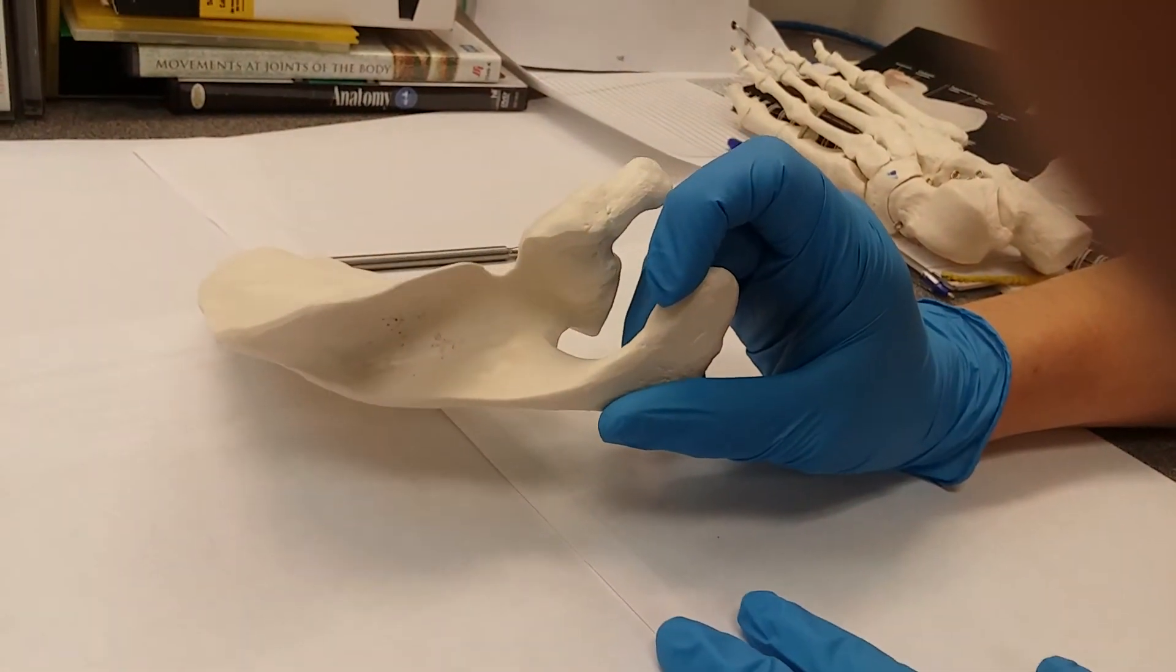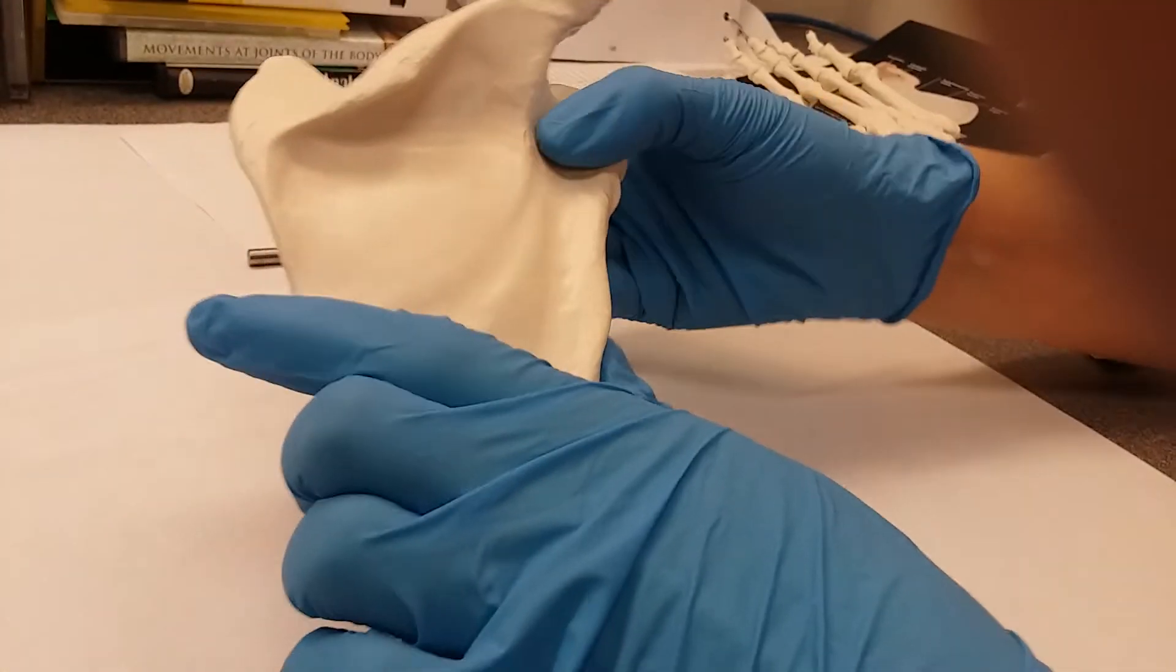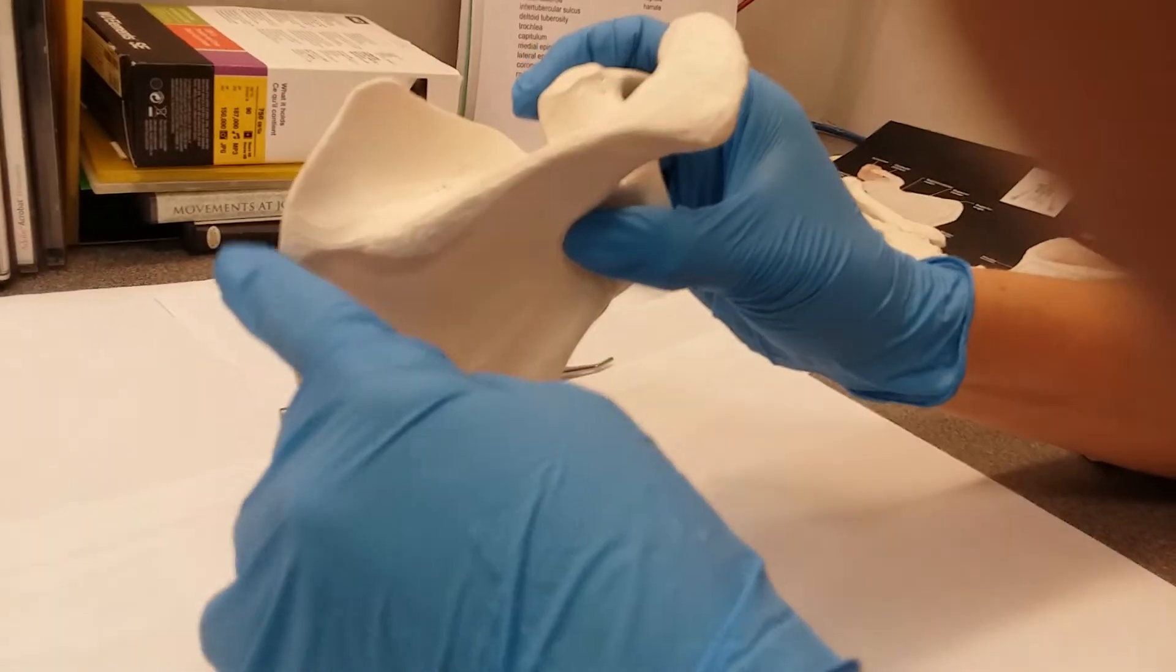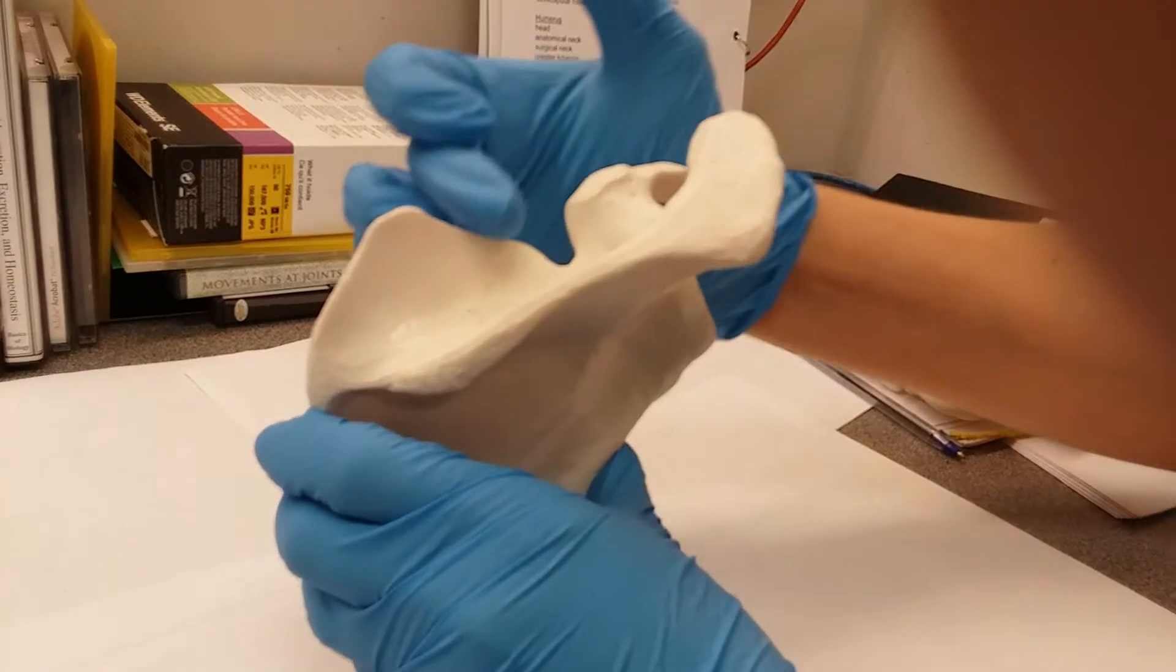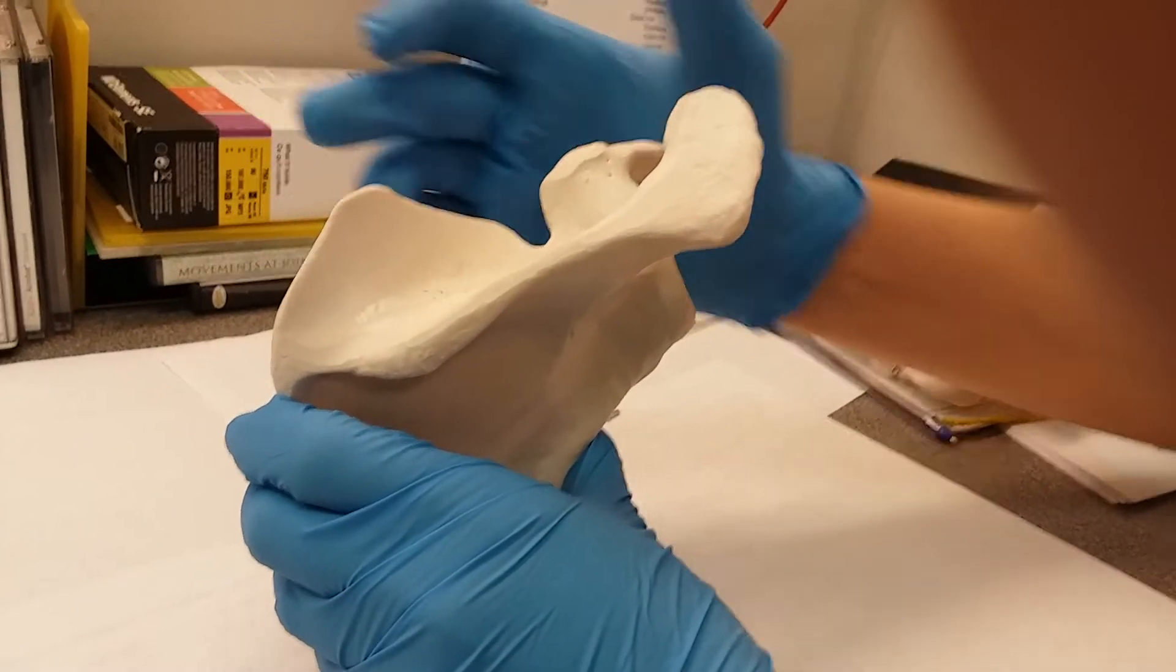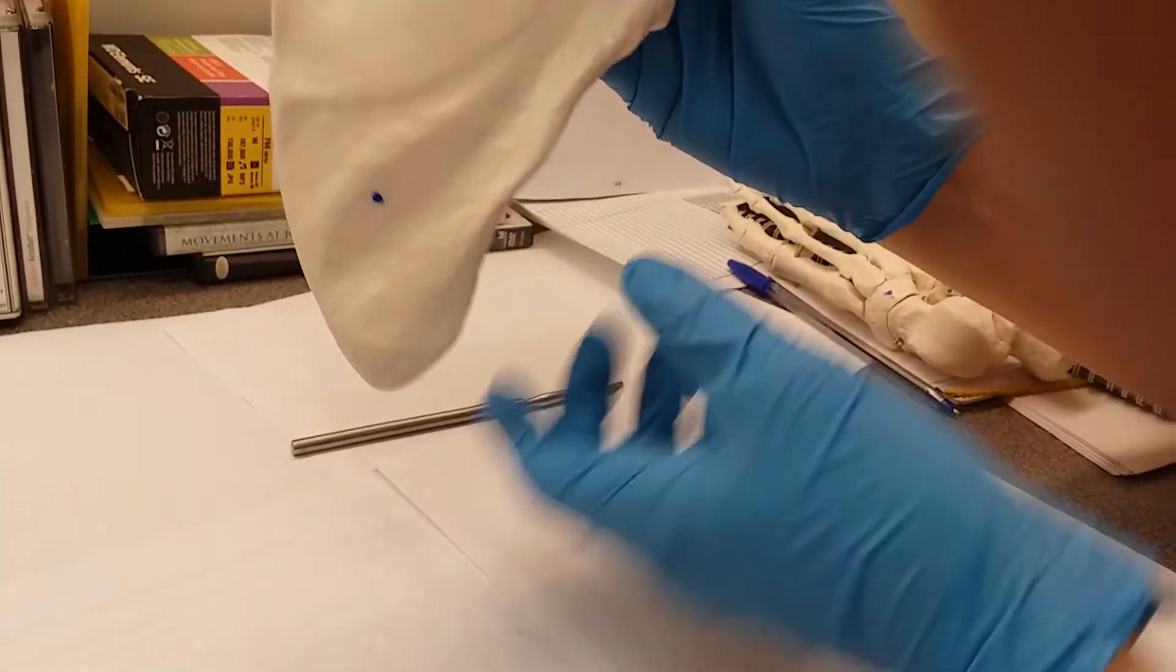Next, we're going to have our superior and inferior angles. Our superior angle is going to be this right here. This angle. Let me show you from the back. This angle. Our inferior angle is down here.